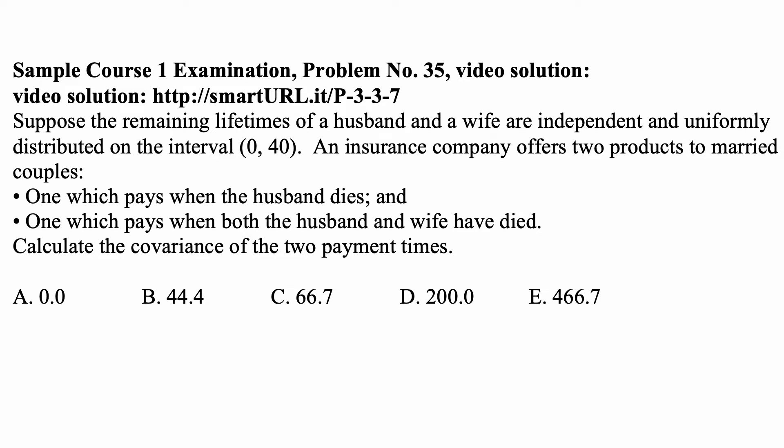Here's the problem for today for exam P on probability. Suppose the remaining lifetimes of a husband and a wife are independent and uniformly distributed on the interval 0 to 40. An insurance company offers two products to married couples: one which pays when the husband dies, and one which pays when both the husband and wife have died. Calculate the covariance of the two payment times.